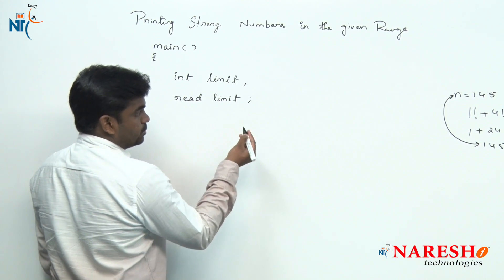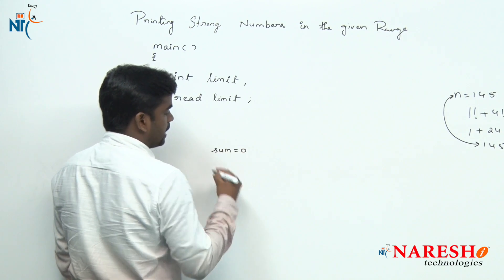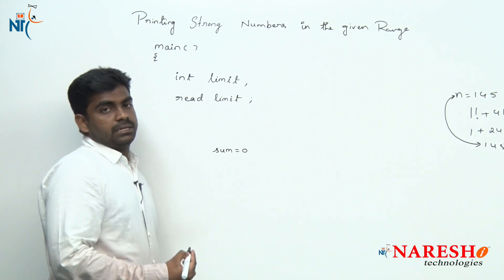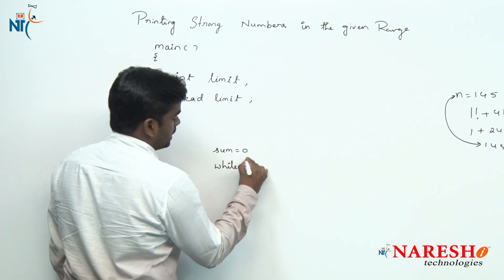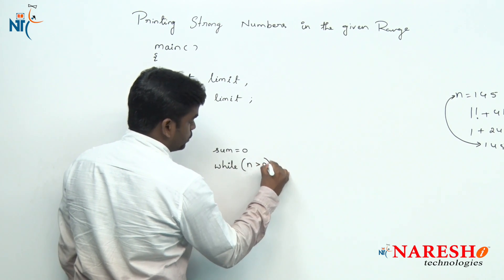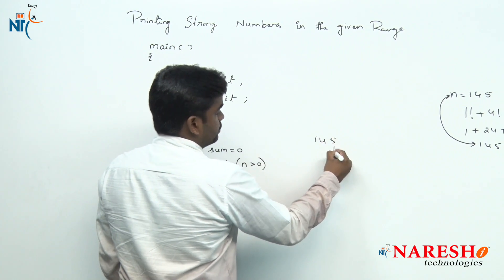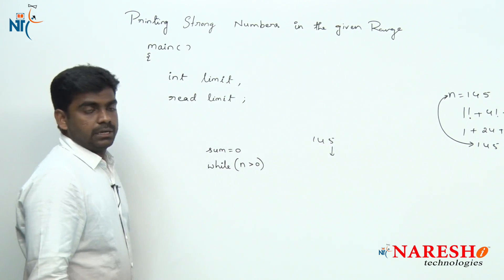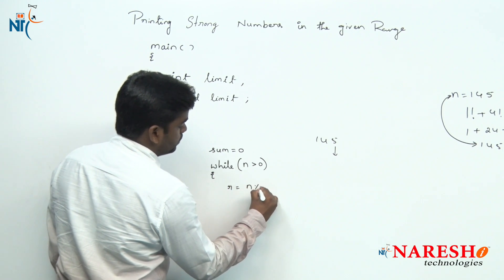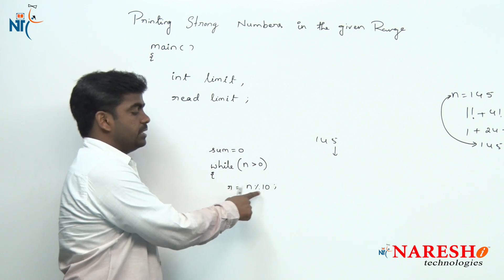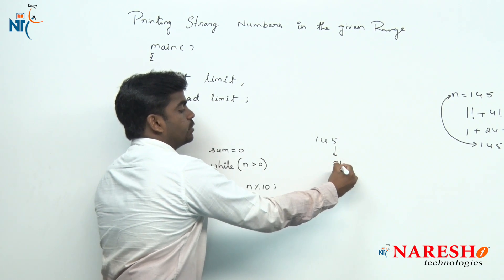We declare N value as 145 and a sum variable, because we are adding every factorial value to sum. First we need to get individual digits — while N is greater than 0, we collect digits one by one. To get the last digit, use R equals N mod 10. Performing mod 10 gives the last digit; for 145, that is 5. Then we find the factorial for that digit.